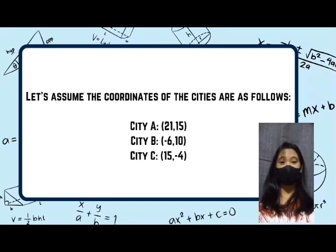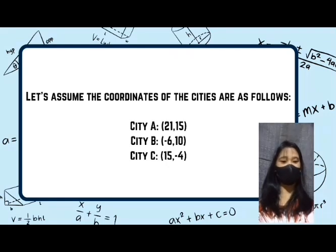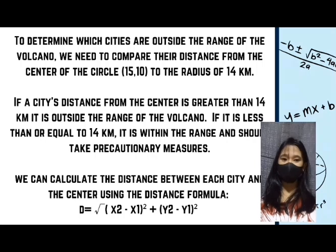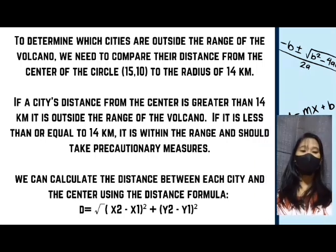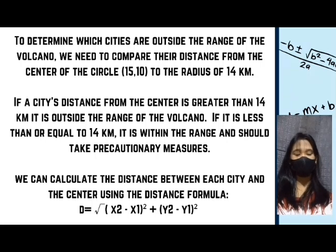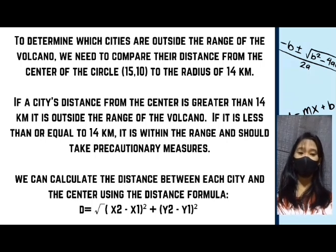Since no cities are given, let's assume the coordinates of the cities are as follows: City A is (21, 15), City B is (-6, 10), and City C is (15, -4). To determine which cities are outside the range of the volcano, we need to compare their distance from the center of the circle (15, 10) to the radius of 14 km. If a city's distance is greater than 14 km, it is outside the range; if less than or equal to 14 km, it should take precautionary measures.